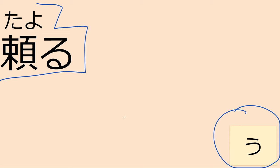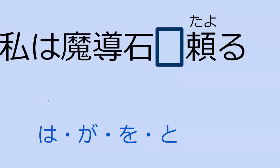So our next verb is 頼る, which is a u-verb. 頼る means to rely on something. What particle do you think the thing that you're relying on would get? Relying on... oh! を. Yes, perfect. So 私は魔導石を頼る means 'I will rely on my magical stone.'